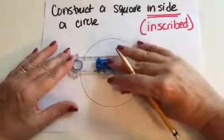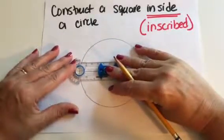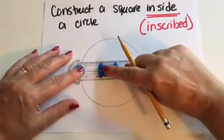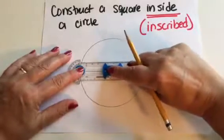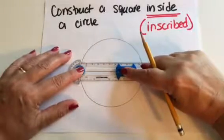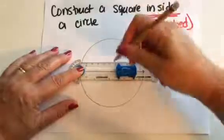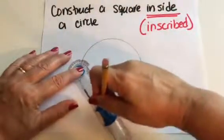I'm going to put my compass on one of the endpoints of my diameter, and open my compass pencil point more than halfway, so past the center of that circle. I'm going to use my pencil to construct an arc,